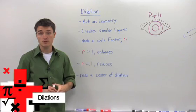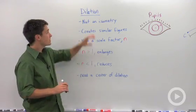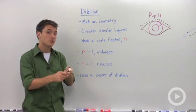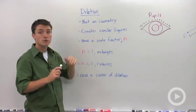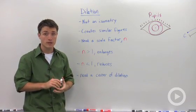There are four types of transformations. Only one of these is not an isometry, and that is a dilation. So a reflection, a rotation, and a translation are all isometries, which means when you perform the transformation, you are creating congruent figures.